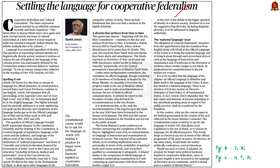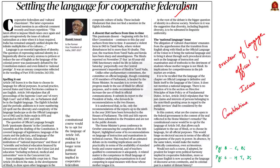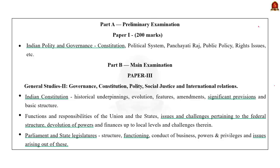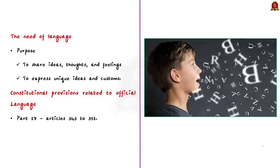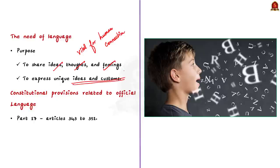The next editorial article gives an overview of the language system in India. The author speaks about constitutional provisions regarding the official language of India and the issues associated with it. Language is a vital part of human connection. Although all species have their own ways of communication, humans are the only ones who have mastered language. Language allows us to share ideas, thoughts and feelings, and is a way to express unique ideas and customs within different cultures and societies.